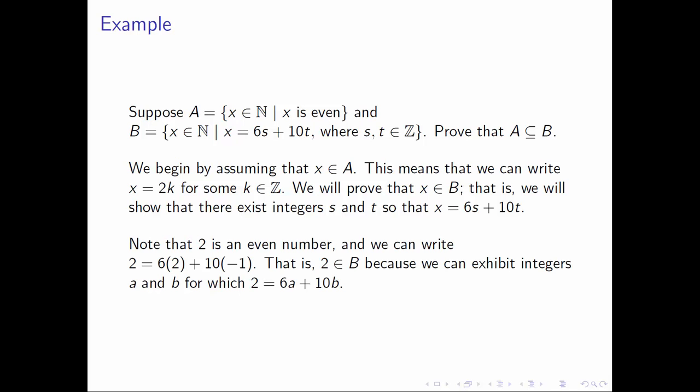Now here's the key ingredient for this proof. The parts that are always difficult in a direct proof is to have this insight as to where to go next. And the insight that we need for this problem is, all right, 2 is an even number. In fact, it's the first smallest natural number that is even. And we note that we can write 2 in the form that we want for the set B. That is, we can take 2 and we can write it as 6 times 2 plus 10 times negative 1. 12 minus 10, that does give us 2. This is showing that 2 belongs to the set B because we've found integers A and B, namely A is 2 and B is negative 1, for which we can write 2 as 6 times an integer A plus 10 times the integer B.